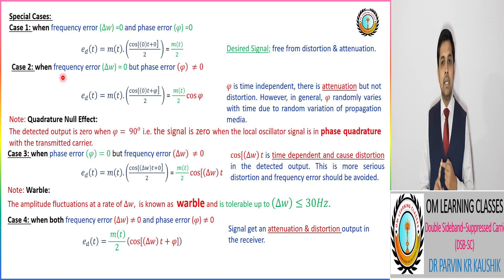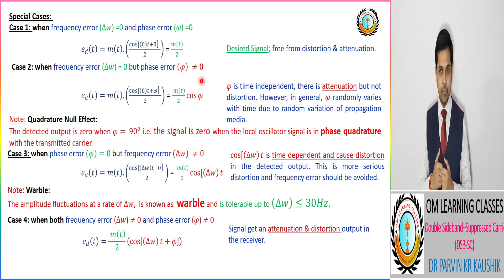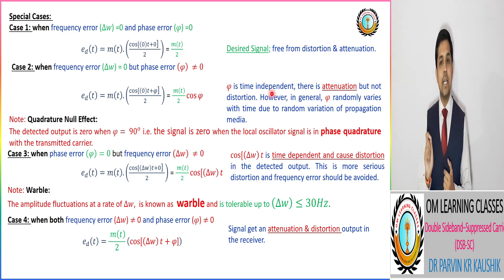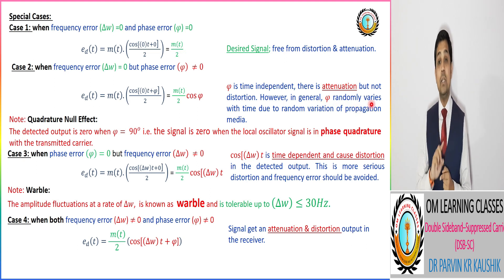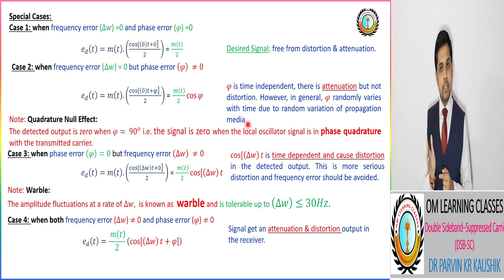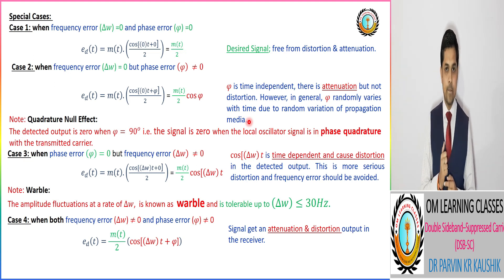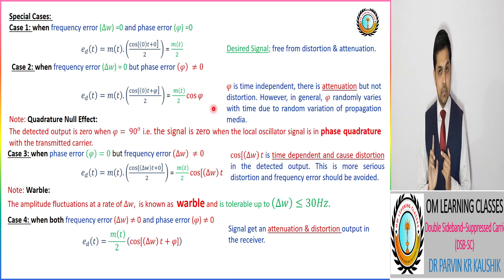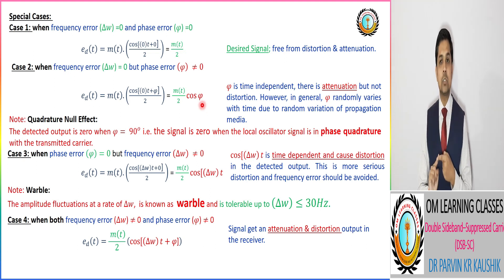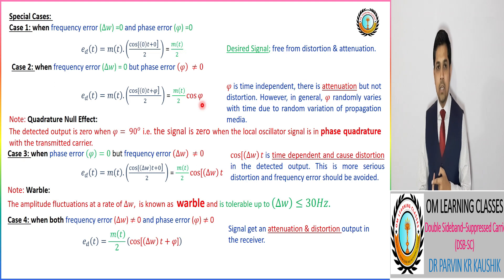In the second case, there is a phase error φ but the frequency error is zero. The output is m(t)/2 × cos(φ). Since φ is time-independent, there is attenuation but no distortion. In general, φ may randomly vary with time, but when considered time-independent, it causes only attenuation with no distortion.